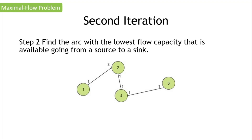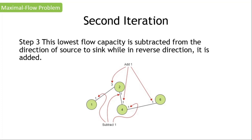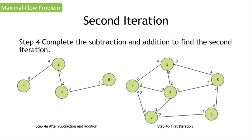Step two: choose the lowest flow capacity. Looking at the values one, one, and one — having the same values, our lowest flow capacity is obviously one. For step three, this lowest flow capacity is again subtracted or added depending on the direction. So one minus one equals zero, three plus one equals four, one minus one equals zero, one plus one equals two, one minus one equals zero, and one plus one equals two. Step four: complete the subtraction and addition process to find our second iteration.